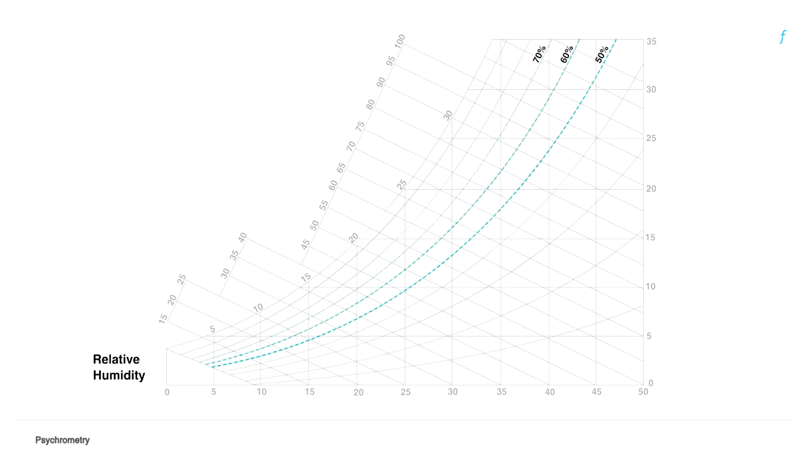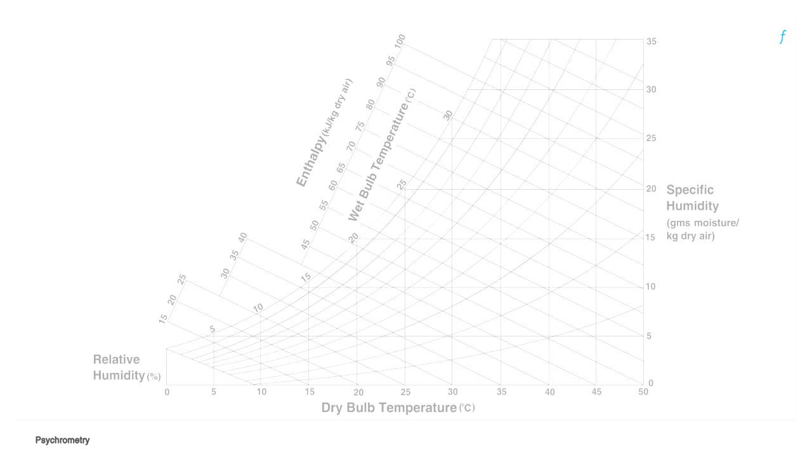So moving towards the right or left on the chart parallel to the x-axis would be sensible heating or sensible cooling where the dry bulb temperature changes without a change in the moisture content of air. Moving parallel to the y-axis would cause humidification or dehumidification, that is changes in humidity levels of air without changing the dry bulb temperature of air.